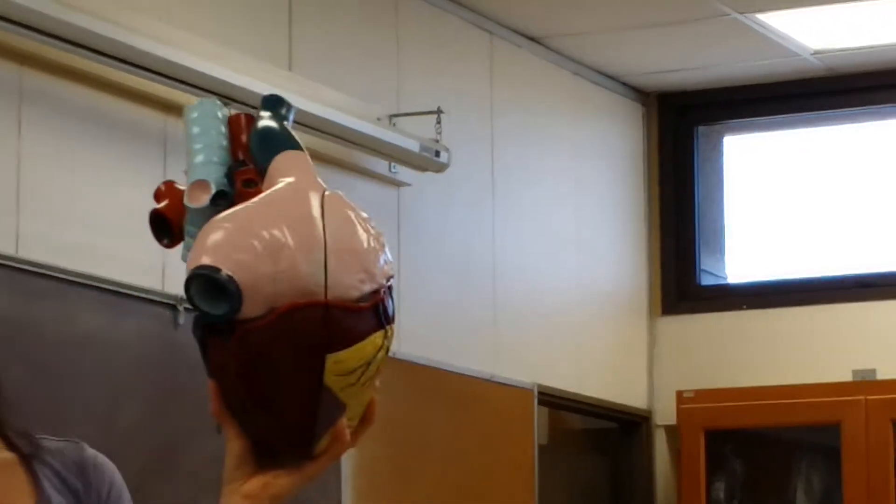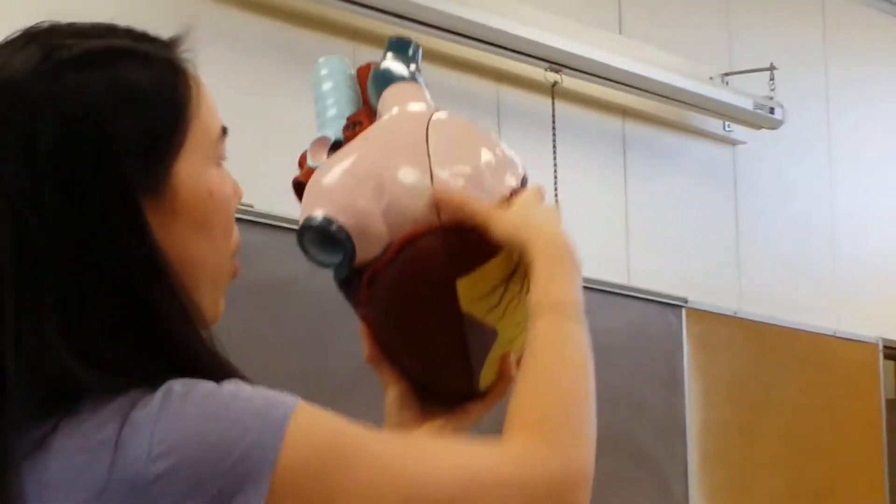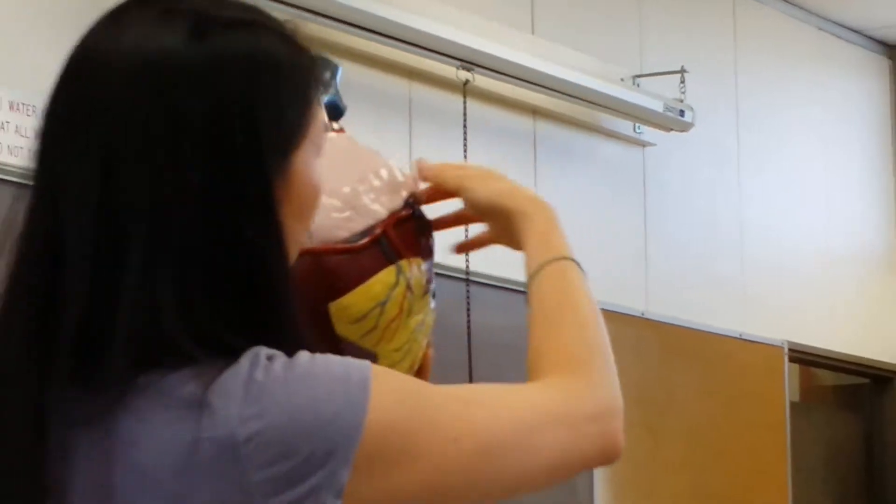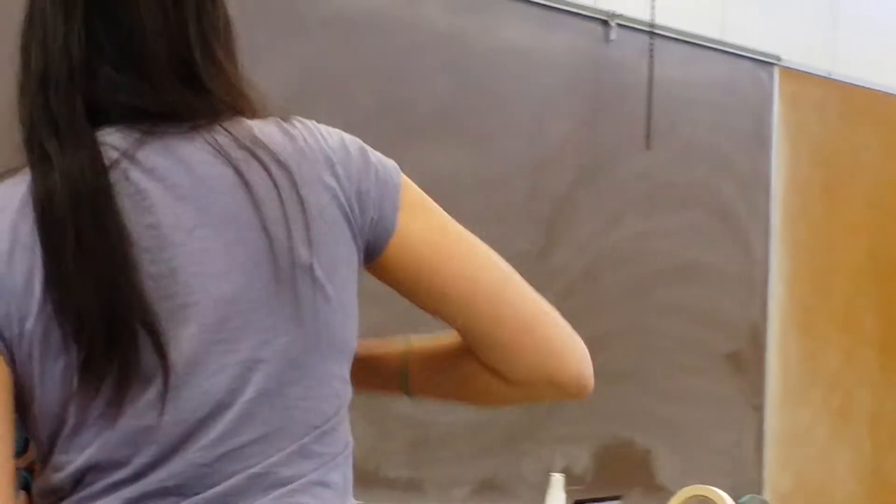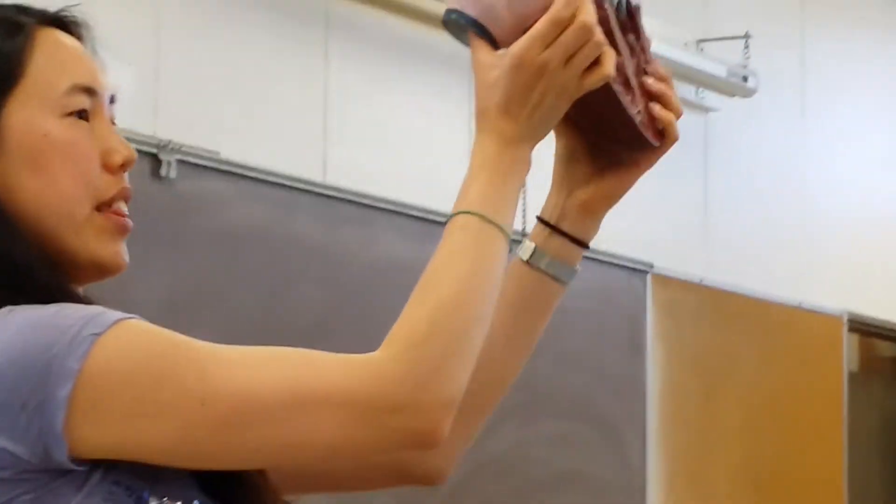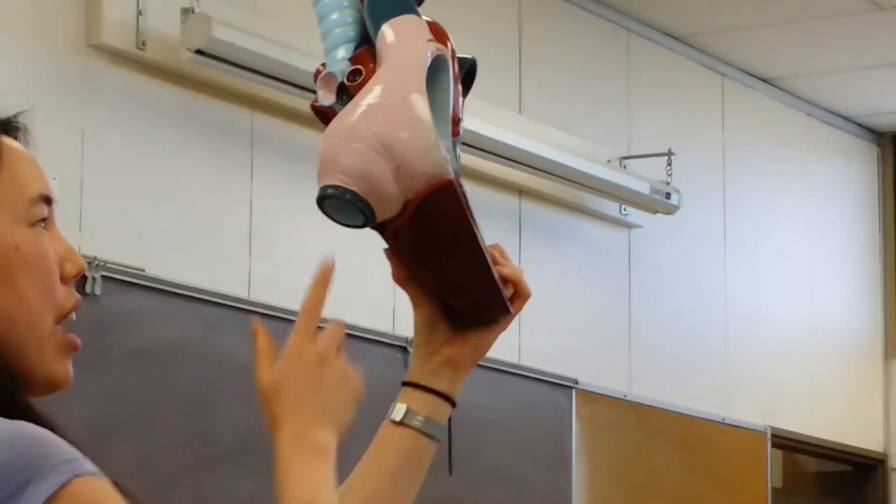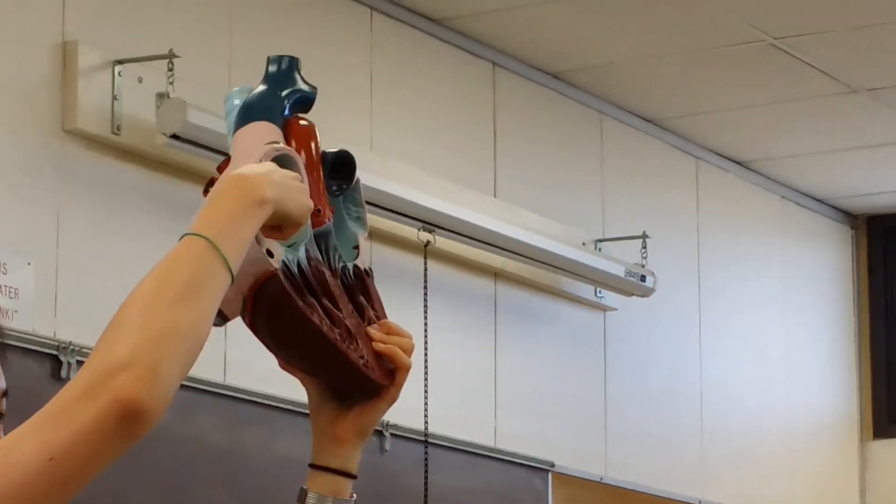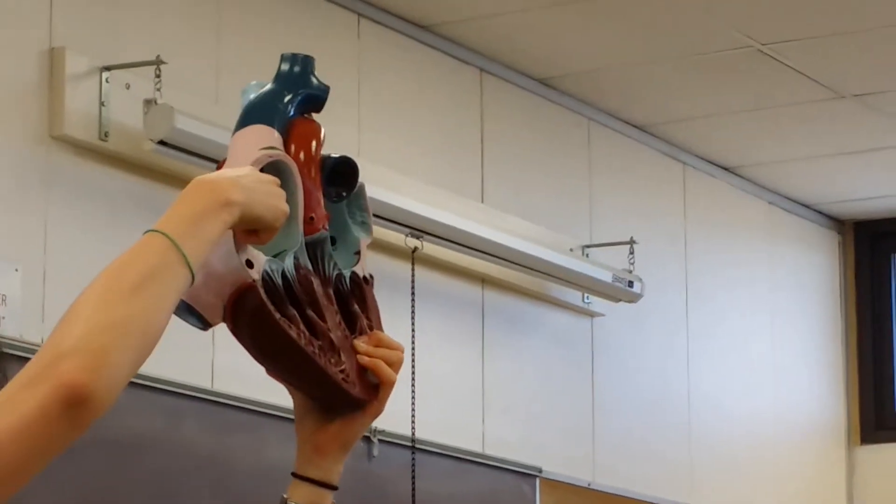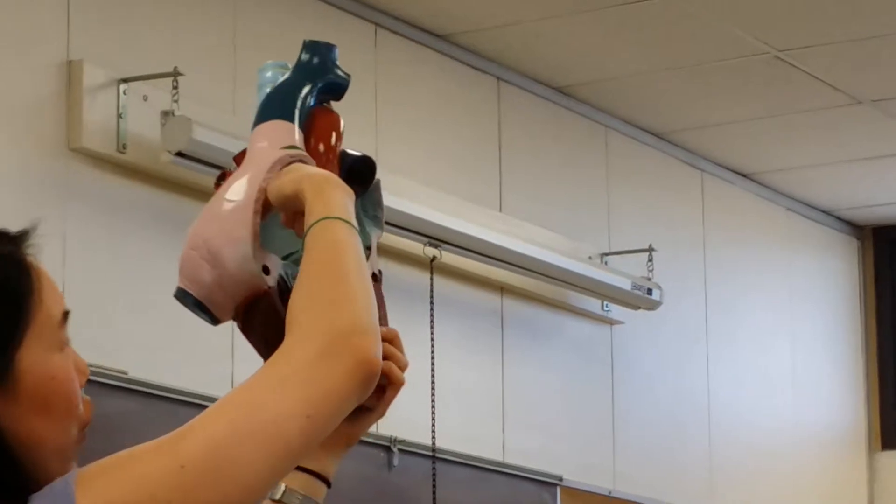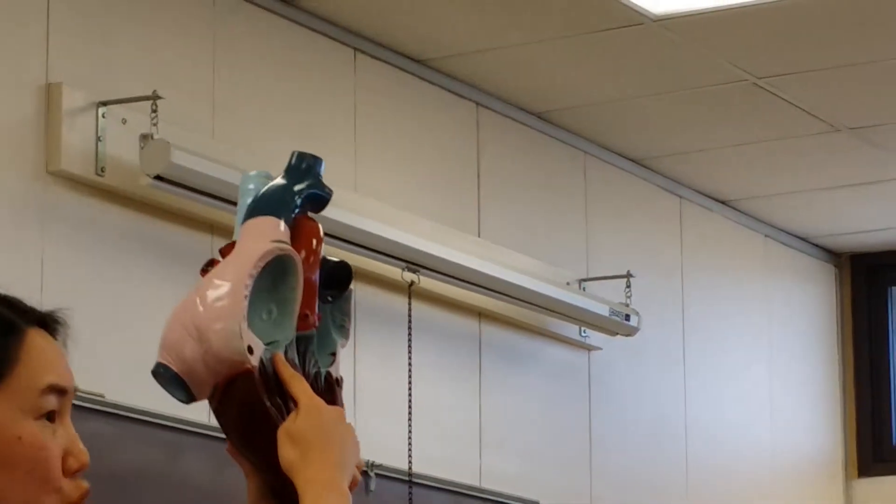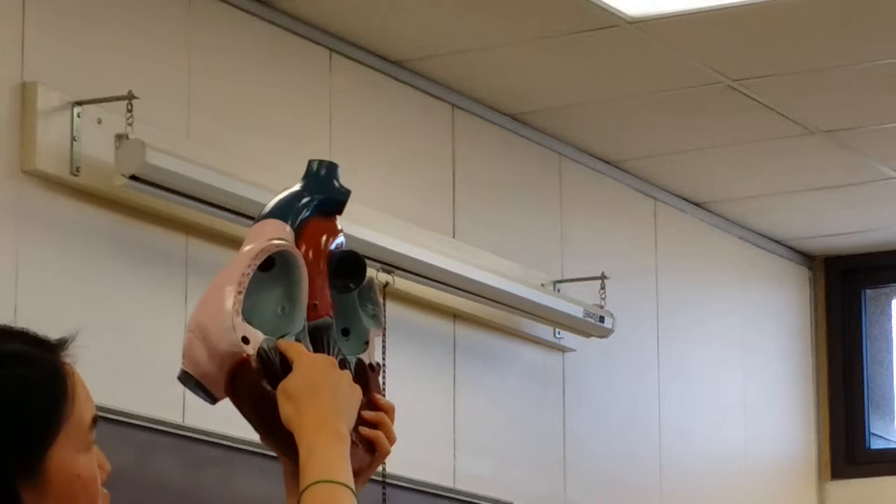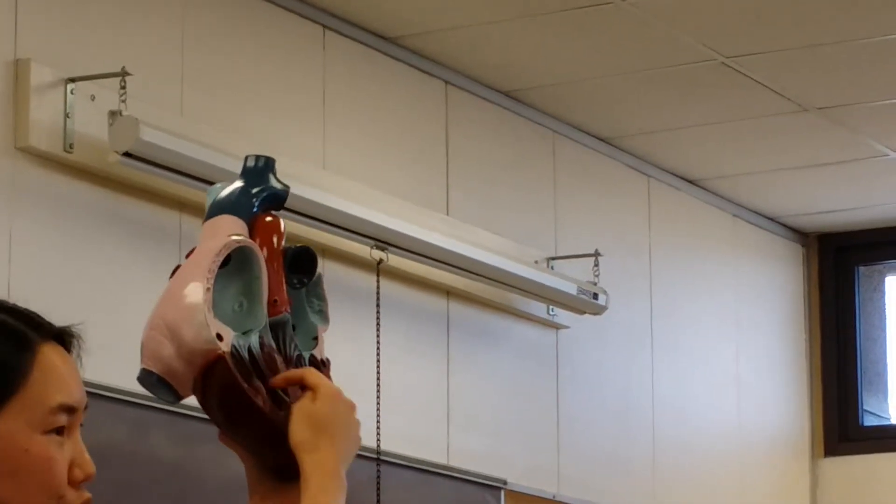Now, the superior and inferior vena cava, they will empty into the right atrium. So if you open up your heart like this, superior vena cava, inferior vena cava, they will merge into your right atrium. From your right atrium, you need to go through a valve. You'll go through the tricuspid valve, which is your right AV valve, into your right ventricle.